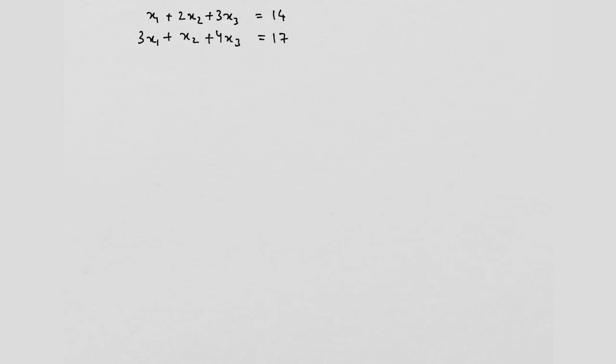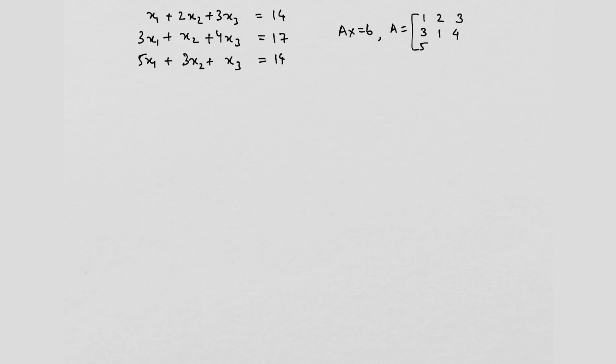Let us start with the basics. I am going to consider a simple set of equations: x1 + 2x2 + 3x3 = 14, 3x1 + x2 + 4x3 = 17, and 5x1 + 3x2 + x3 = 14. We write it in the form Ax = b. Here A is the matrix [1, 2, 3; 3, 1, 4; 5, 3, 1], x is the variable vector [x1, x2, x3], and b is the right hand side [14, 17, 14].